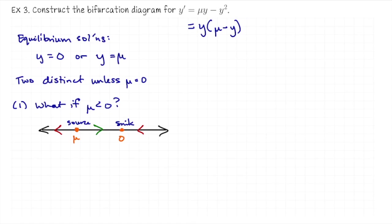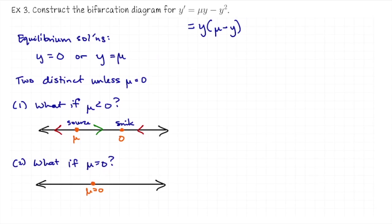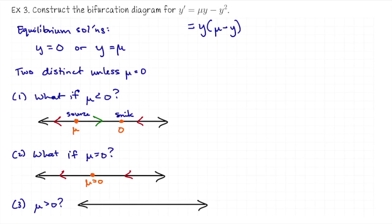If mu equals zero, we have exactly one equilibrium solution right at zero. Plugging mu equals zero back into the differential equation, the right-hand side is negative y squared. So both to the left and to the right of zero, dy/dt is negative — what we have is a node. If mu is positive, we have two equilibrium solutions again, but this time zero is on the left and mu is on the right.